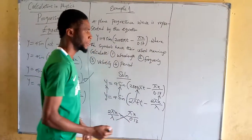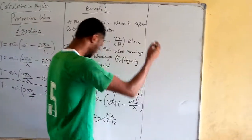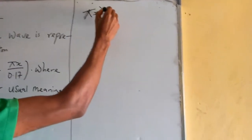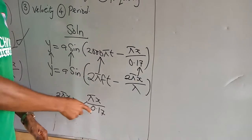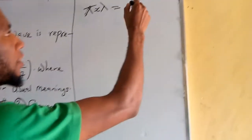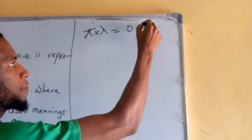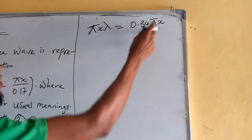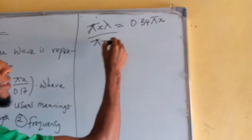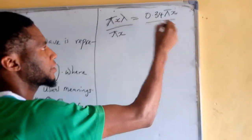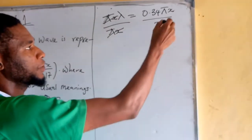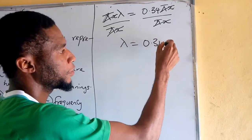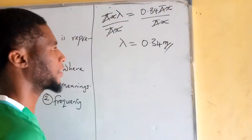We cross-multiply to solve for wavelength. We now have: wavelength × π = 2 × 0.17, which gives us 0.34π. Dividing both sides by π cancels π, so the wavelength is equal to 0.34 meters. We have now calculated our wavelength.